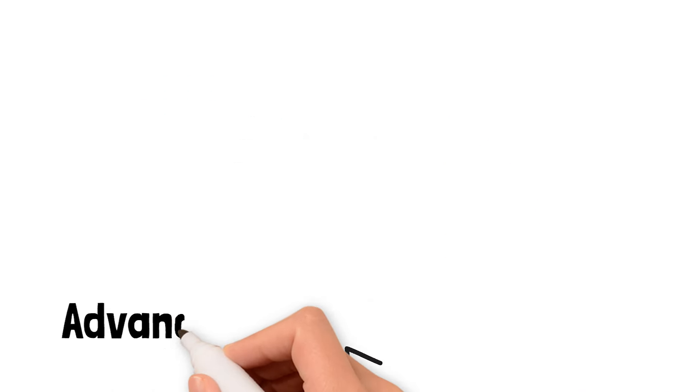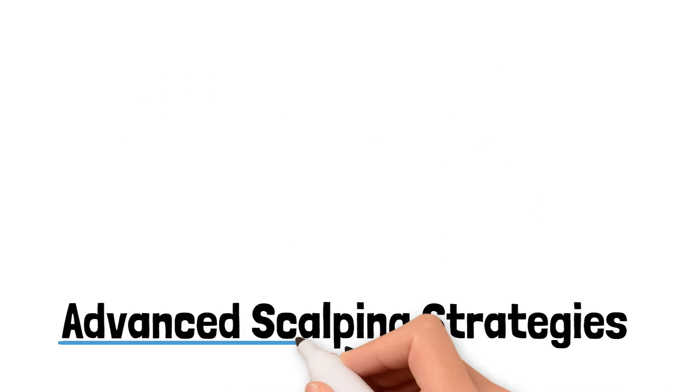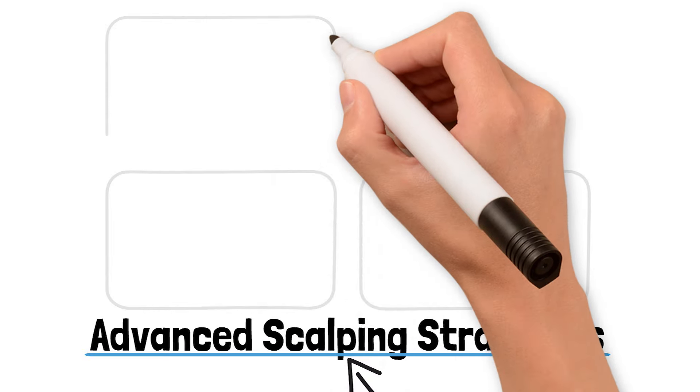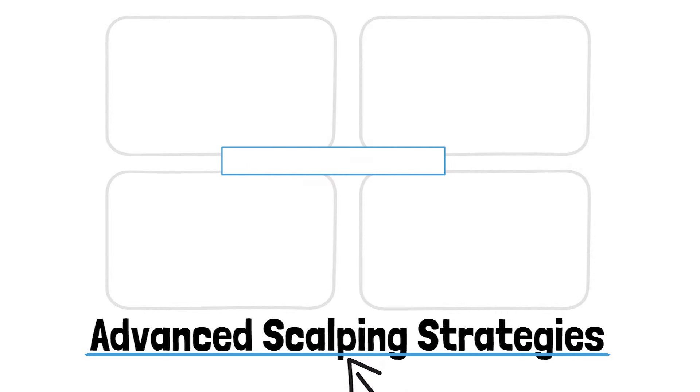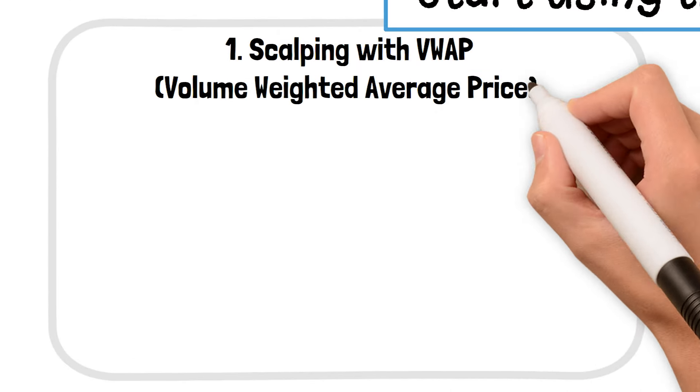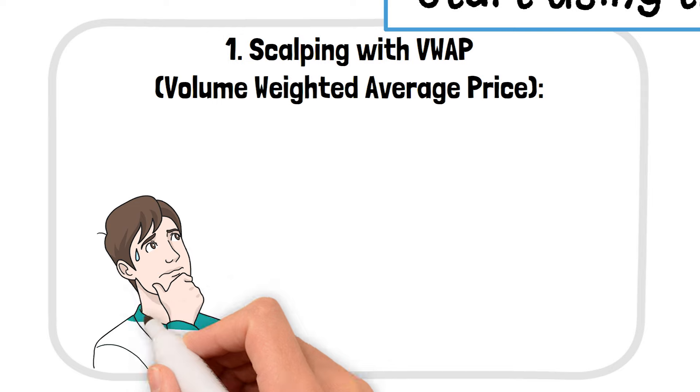Now that we've covered the basics, let's take it up a notch with some advanced strategies that aren't as widely known but can give you an edge in scalping. I'll keep it simple so you can follow along easily and start using these today. First, scalping with VWAP, Volume Weighted Average Price. VWAP might sound complicated, but it's actually super useful.